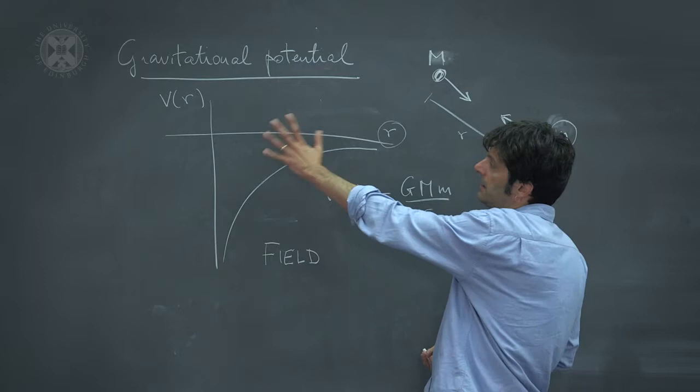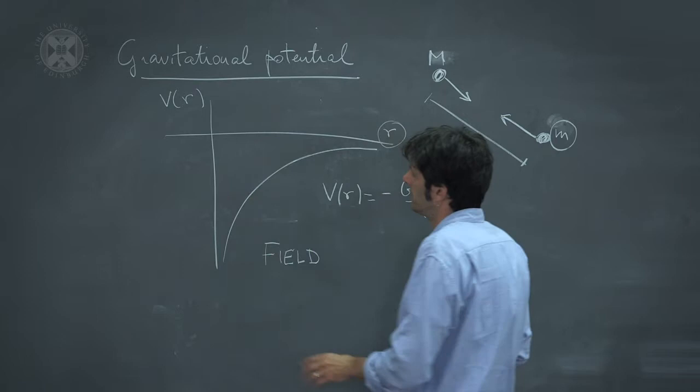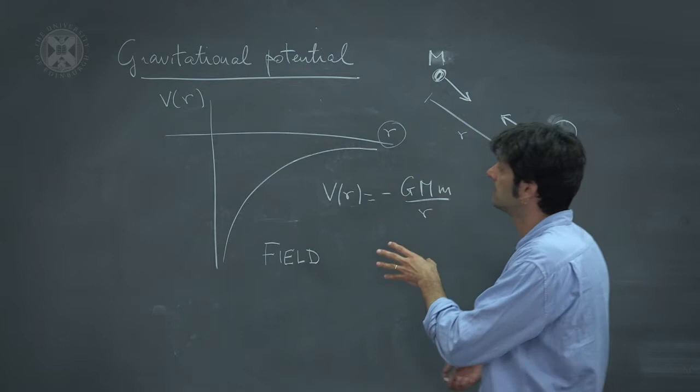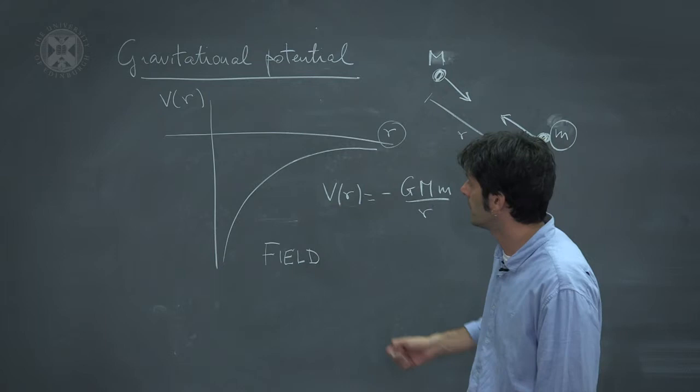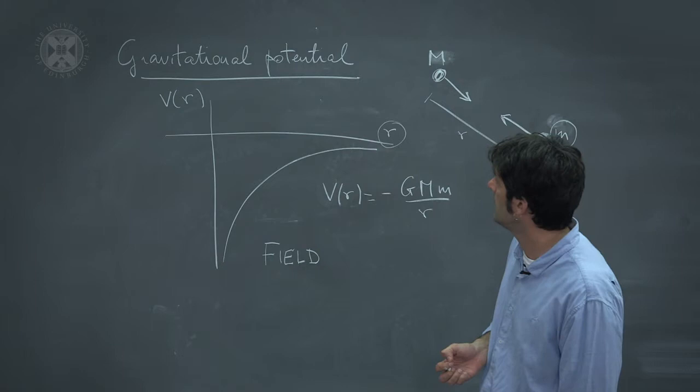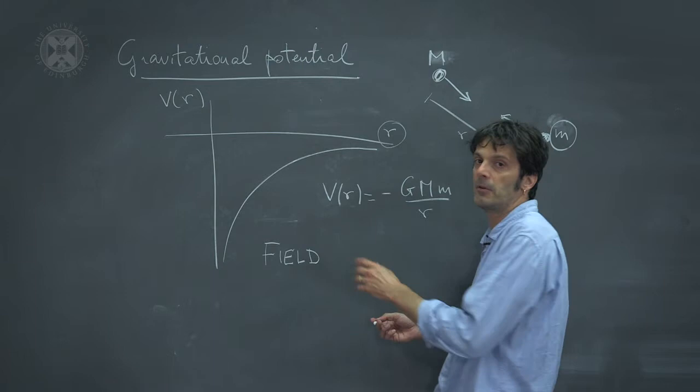A field is some mathematical function which describes some physical property of your system at any point in space. So in this particular example, the gravitational potential describes the potential energy which is due to the gravitational interaction at any point in space. Later on in this MOOC, you will see other examples of potentials and other examples of fields in slightly different contexts. However, the basic idea remains the same.